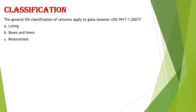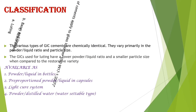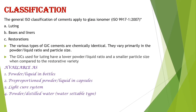Classification: based on ISO classification, GIC is of three types — luting, bases or liners, and restorations. The various types of GIC cements are chemically identical and vary primarily in powder-to-liquid ratio and particle size. GIC used for luting has a lower powder-to-liquid ratio and a smaller particle size.